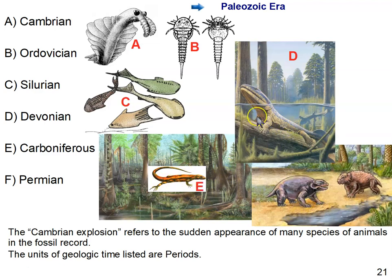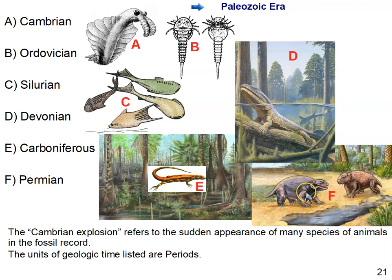In the Carboniferous, we see the evolution of reptiles — certain amphibians developed adaptations allowing them to live on land 100% of the time, representing the first reptiles. Then in the Permian, we see all kinds of different lines of reptiles and mammal-like organisms, the beginning of all the lines of descent leading to the animals on Earth today.